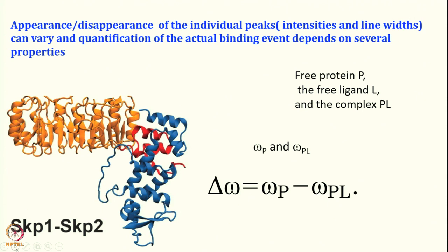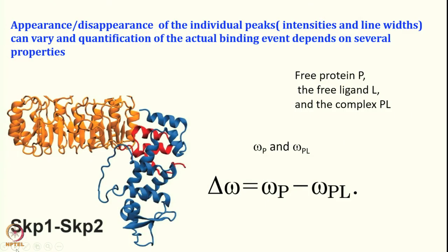So, peaks can shift, appear at a different position, or disappear. Appearance or disappearance — changes in intensity or line width — need to be quantified to find the actual binding effect. This depends on several properties of the interaction. The key parameters are: the concentration of various species, the association rate, the dissociation rate, the KD, and the exchange between the bound and free forms.